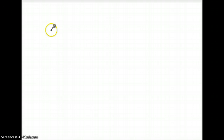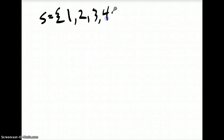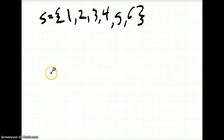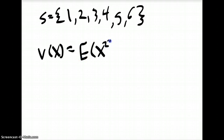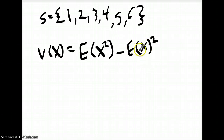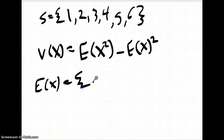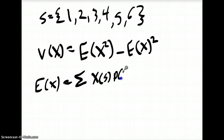Here's a quick example of how to calculate variance — we'll use rolling a die. The sample space is {1, 2, 3, 4, 5, 6}. We're going to use the simple equation: V(X) equals the expected value of X squared minus the expected value of X, squared. So let's first calculate the expected value of X. We know E(X) is equal to the sum of the random variable times its probability for all s in S.